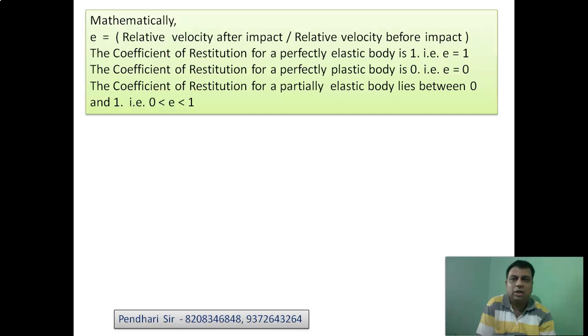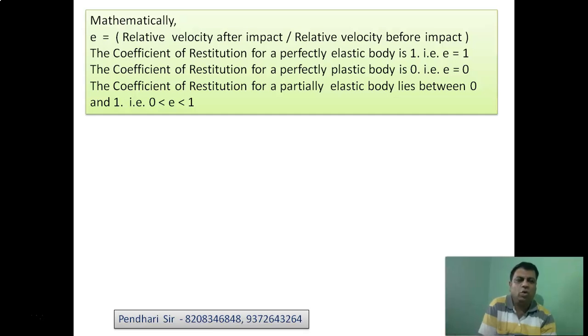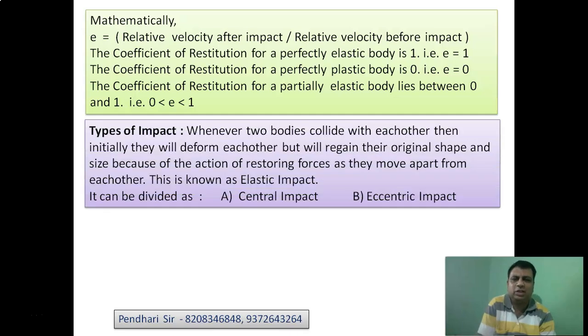Mathematically: if the coefficient of restitution e = 1, the body is perfectly elastic. If e = 0, it is a perfectly plastic body. If e is between 0 and 1, it is a semi-plastic, partially plastic, or partially elastic body.